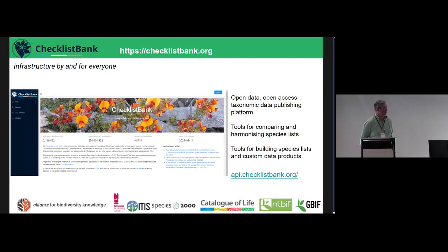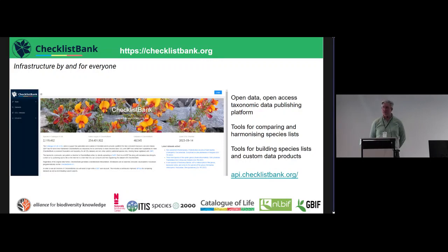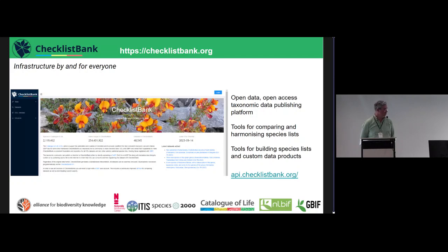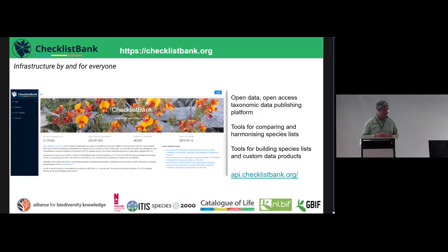Checklist Bank was launched in December 2020, and it was a project of various partners, including Catalog of Life and GBIF, that co-developed it. It's basically an open data repository for taxonomic and nomenclatural data, but it also holds checklists of policy relevance. It contains tools for comparing and harmonizing species checklists, and all the assembly tooling needed to build the Catalog of Life checklist — a global list of all described species of all life on Earth.